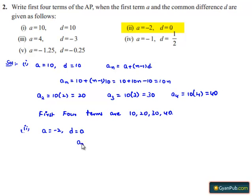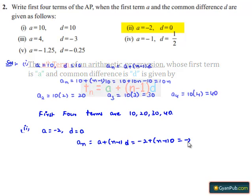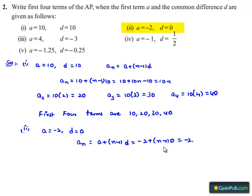Let us calculate the nth term: an = a + (n-1)d = -2 + (n-1) × 0 = -2. This term is independent of n. Therefore, for all values of n, we will get the value -2.